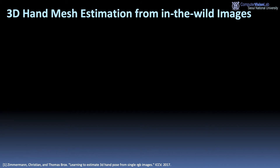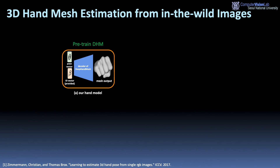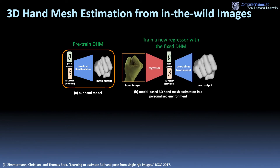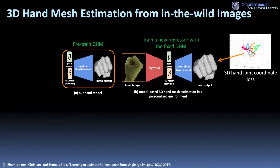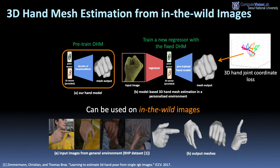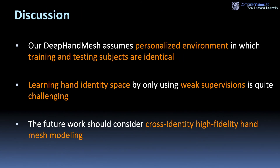Our deep-hand mesh can be used for 3D hand mesh estimation from in-the-wild images. First, we train deep-hand mesh. Second, we train a new regressor with the fixed decoder of deep-hand mesh using 3D joint coordinate loss. The figure shows that our deep-hand mesh can be applied to in-the-wild images. Our deep-hand mesh assumes a personalized environment in which training and testing subjects are identical. Learning hand identity space using only weak supervisions is quite challenging. Future work should consider cross-identity high-fidelity hand mesh modeling.